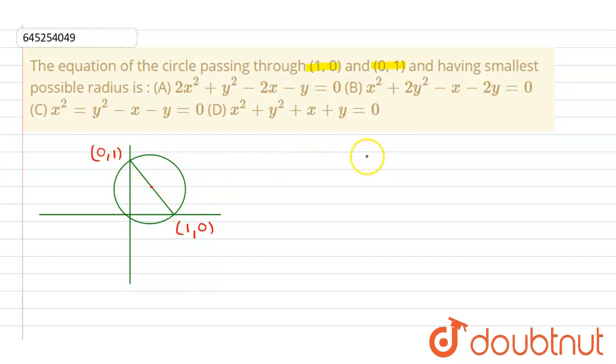Therefore, center will be midpoint of these two points. From this we can say that center of our required circle will be the midpoint of these two points, which will be (1/2, 1/2). Now we have center of circle.